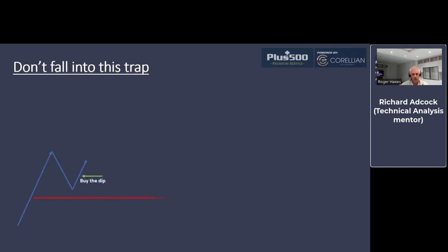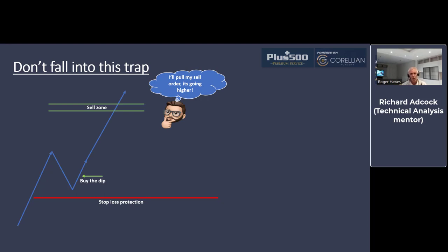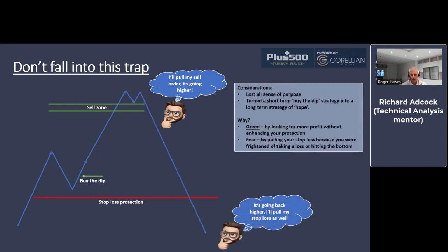Now one trap I don't want you to fall into: here we have exactly the same setup — we buy the dip, put our stop loss protection in at an affordable level, create our sell zone — and the market hopefully moves in our favor. What we should NOT be doing is pulling your sell order completely, watching it go higher, and hoping it goes higher and higher. I've given you a strategy that crystallizes the intrinsic value in that trade. Because if you get greedy and look for more profit without enhancing your protection, you risk losing everything. Remember — we're potentially fighting against the trend here, buying a dip in a bearish market.